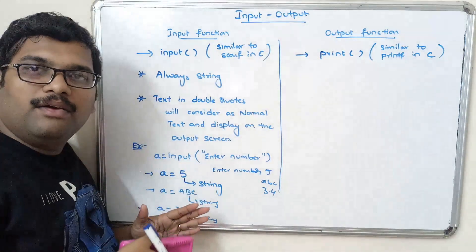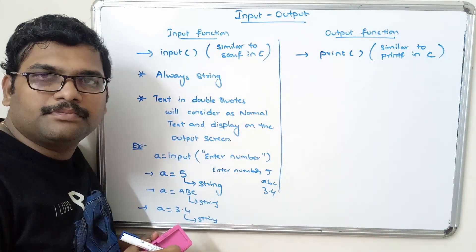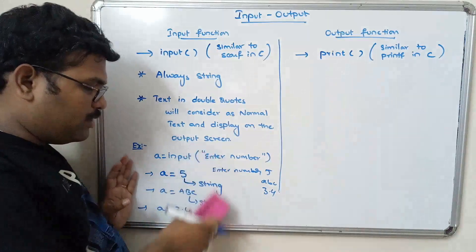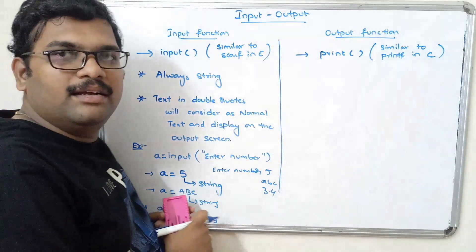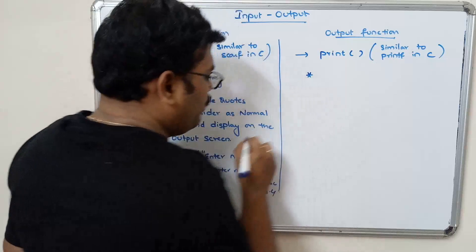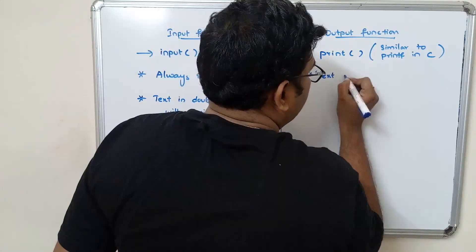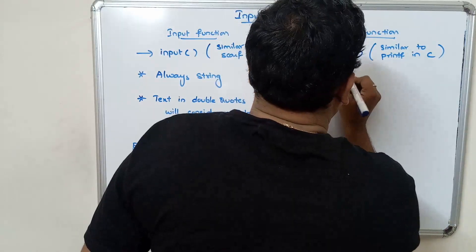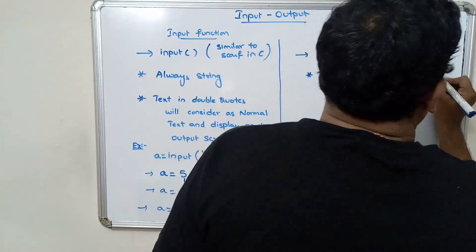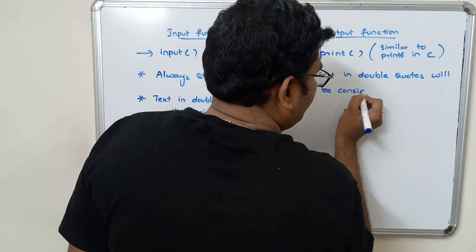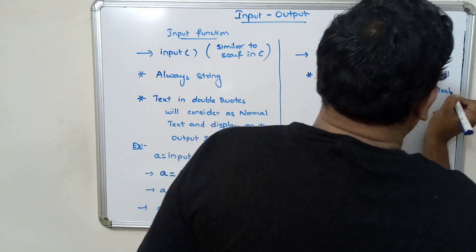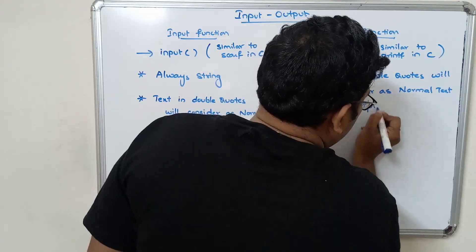In order to change the string format, we need to use type conversion, which we will see in the next video. The input function always takes data in string format. For the print function, whatever text is written in double quotes or single quotes will be considered normal text and displayed on the monitor output screen.